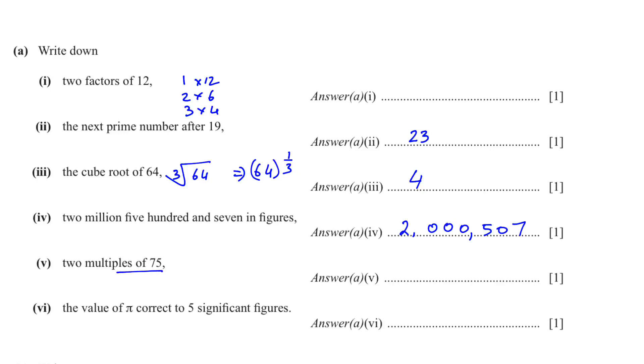Two multiples of 75. You can write 75 times 1 is 75, 75 times 2 is 150. The value of pi correct to 5 significant figures. When you put in the calculator you will get 3.14159. They ask for 5 significant figures. This is the 5th significant figure. The number after that, if it is 5 or more than 5, we add 1 to the previous number. So we have 3.1416.